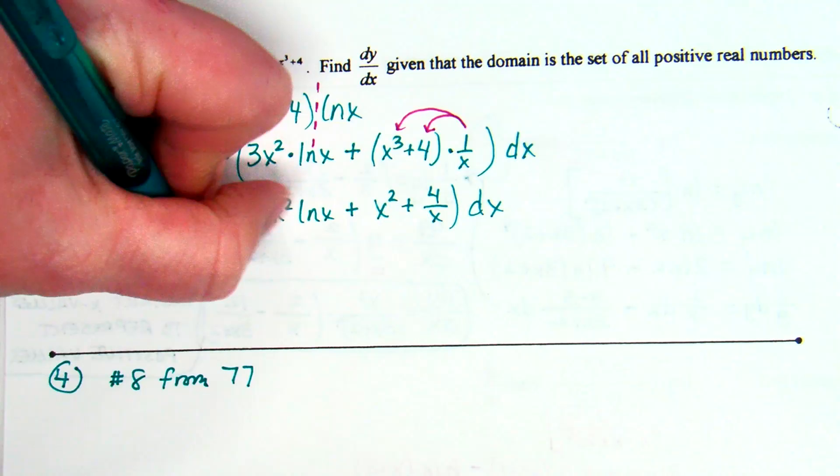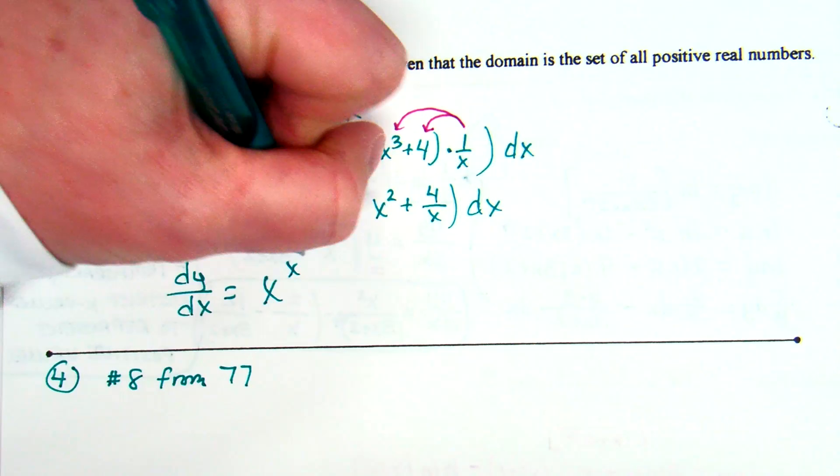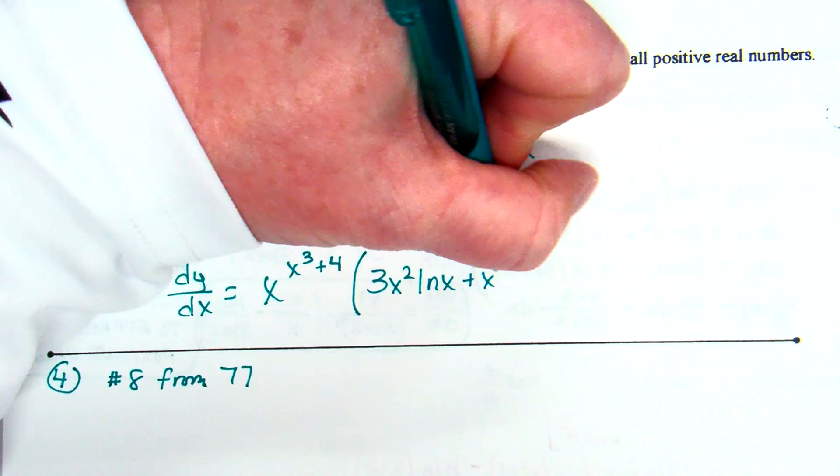dy/dx equals — multiply the y over — which is x raised to the (x³ + 4), times (3x² · natural log of x plus x² plus 4/x).